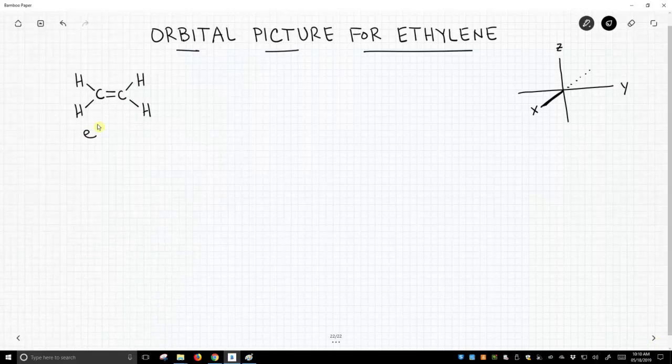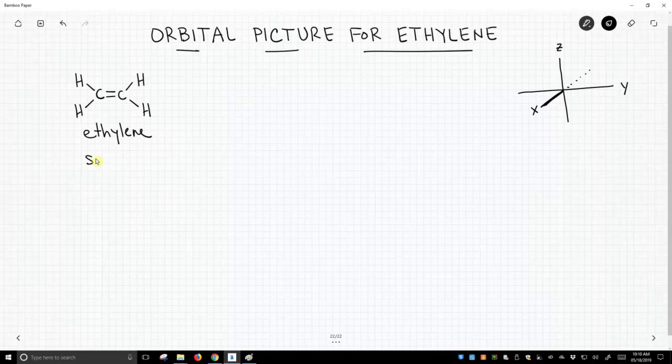So here's our molecule ethylene. Ethylene has two sp2 hybridized carbons, and we're going to draw the orbital picture for this.